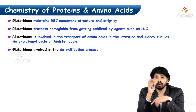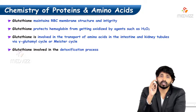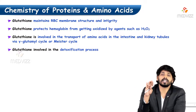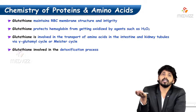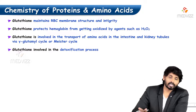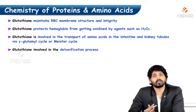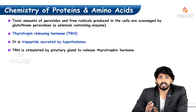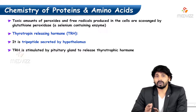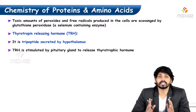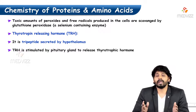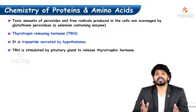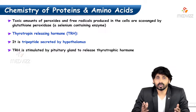For the gamma-glutamyl cycle, glutathione formation is important. If glutathione is not present, some amino acids will start excreting in the urine, causing aminoaciduria. Glutathione is also important in the detoxification process — toxic amounts of peroxides and free radicals produced in the cell are scavenged by glutathione peroxidase, a cell-based enzyme that requires glutathione and contains the mineral selenium. In MCQs, they may ask for a selenium-containing enzyme — glutathione peroxidase is the best example.